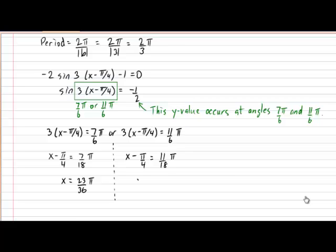Now that we were able to solve for an x value of 23 over 36 pi, we can also find that the second zero that occurs within one cycle is located at 31 over 36 pi.